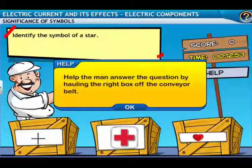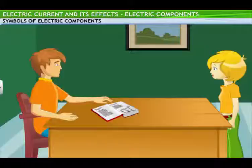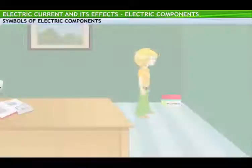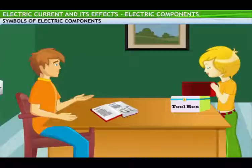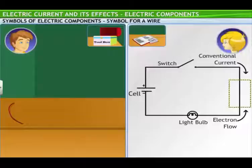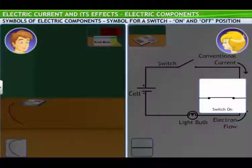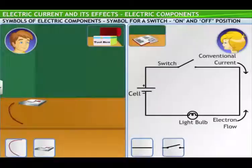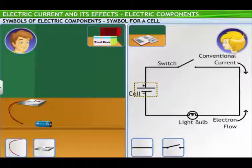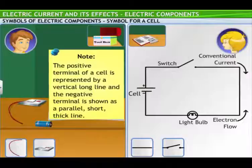So, what are the symbols for different electric components? Let's see. I will show you the symbols of some commonly used electric components. Tina, could you get my toolbox please? Pass me the items in the toolbox. I will connect each item and show you how it is represented by a symbol on the diagram in the book. Here's a wire. This is the symbol for a wire. I've taken out a switch now. There are two symbols for the switch — one for the on position and the other for the off position. I will keep the switch in the off position for now. Let me connect the wire to the switch. What's the symbol for this? This is the symbol for a cell.